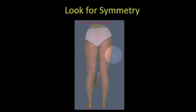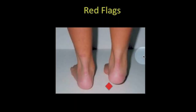Look for symmetry. This child has lumbar scoliosis, and this is very evident in forward bending. Or this child has a cavus foot on the right side, which is very important to know because it demands a more careful neurological evaluation.